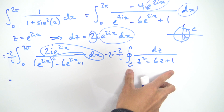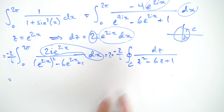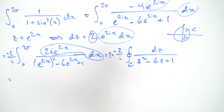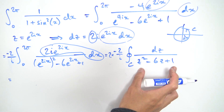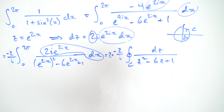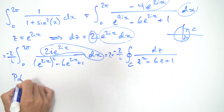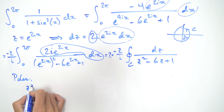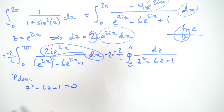We now have a contour integral, so we can use Cauchy's residue theorem. If we can calculate the residues, we know the value of our contour integral. The function has poles because it's 1 over a polynomial — we just need to find where those poles are by solving where the denominator z squared minus 6z plus 1 equals zero, i.e., the roots of this quadratic. We use the quadratic formula.